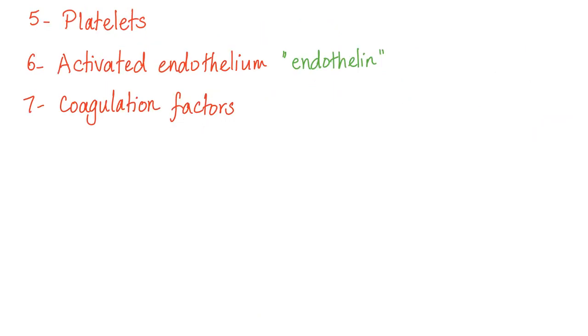What are other pro-coagulation stuff? Platelets. They are called thrombocytes. Activated endothelium. Remember, endothelium has a bipolar disorder. Under normal conditions, it's smooth, it's anti-coagulation. But once there is an injury, it's activated and it acts in harmony with platelets towards a common goal, which is clotting and coagulation. When the endothelium is active, it secretes endothelin, the protein of the endothelium, and this is pro-coagulation big time.